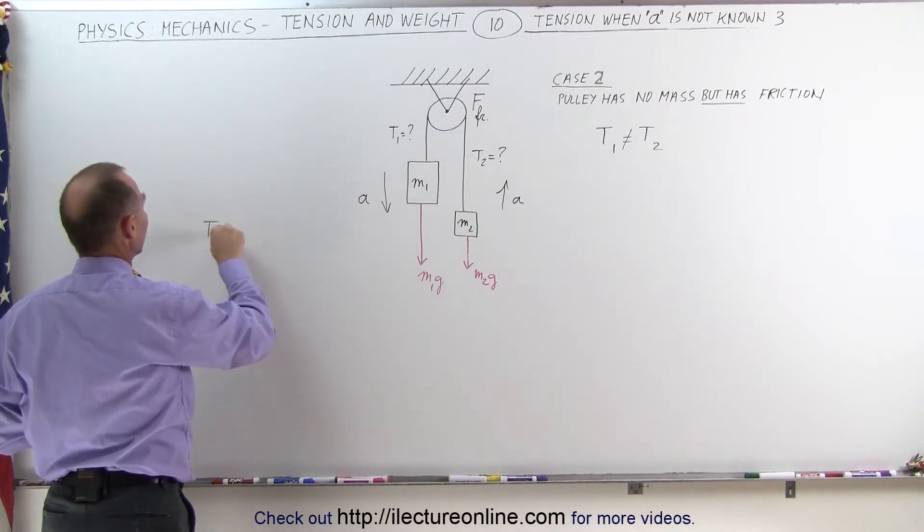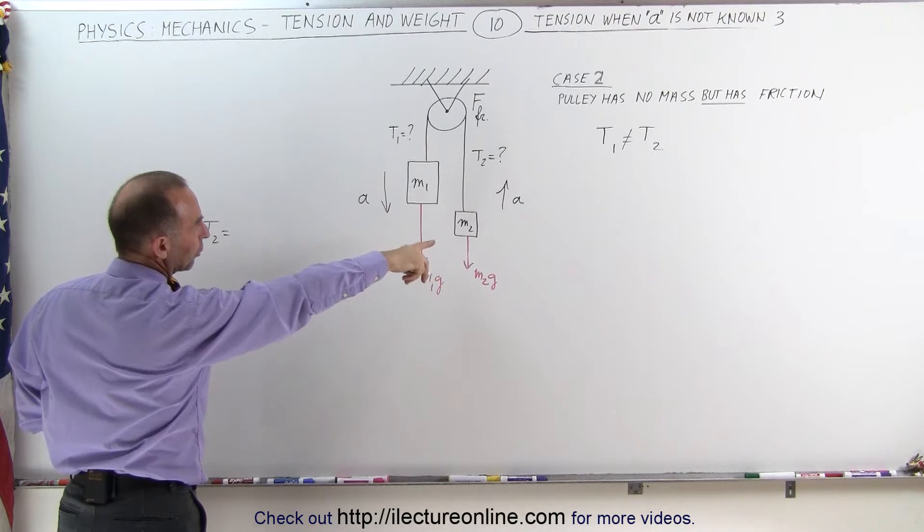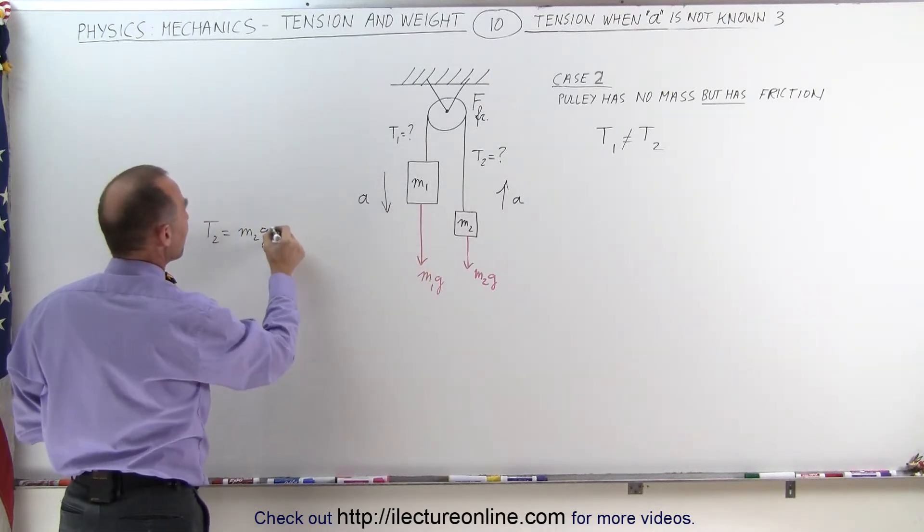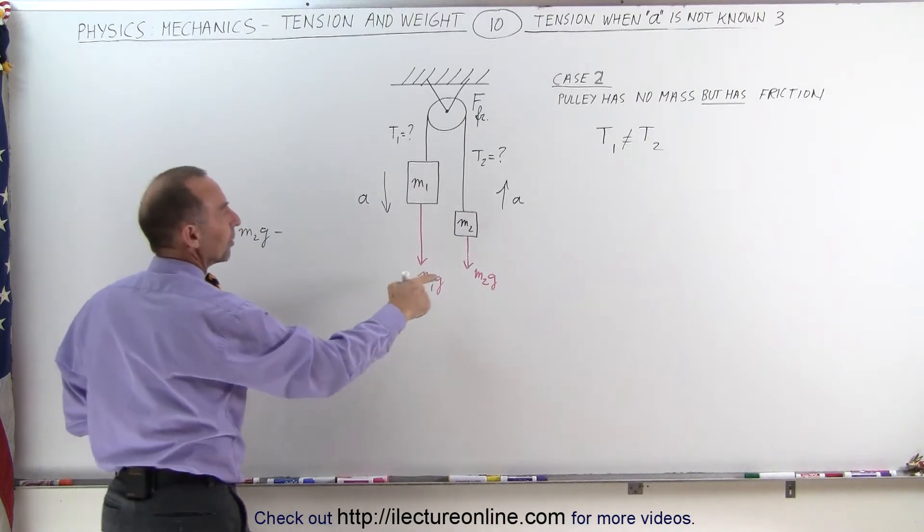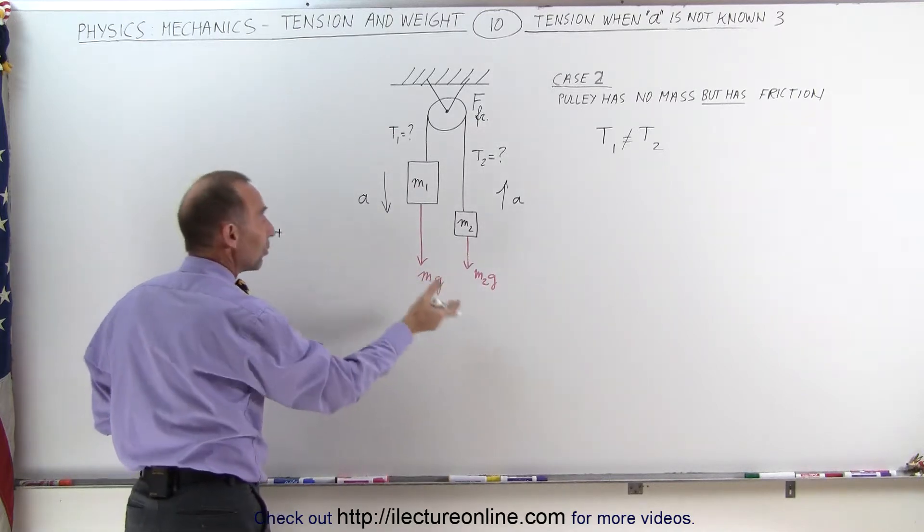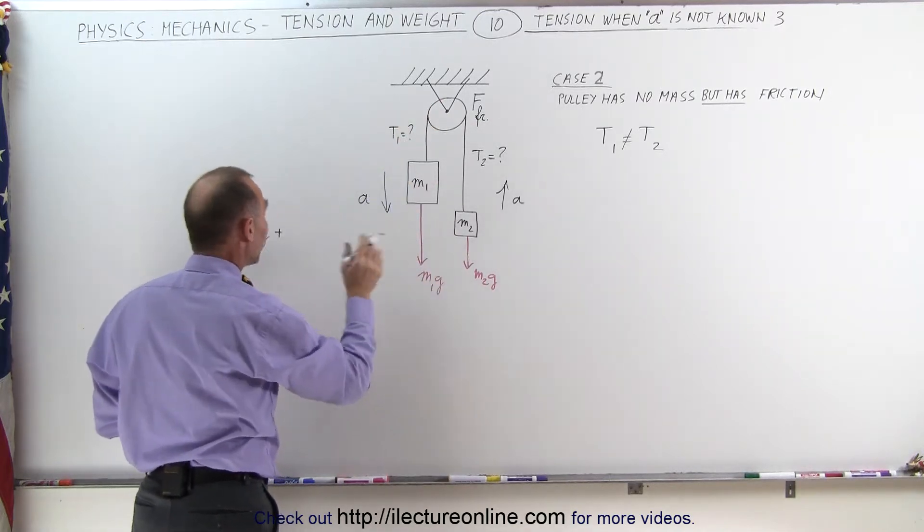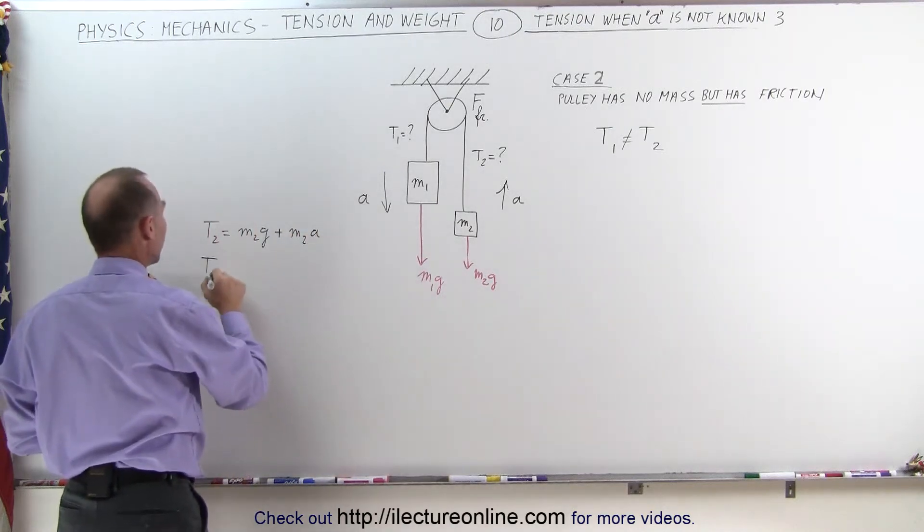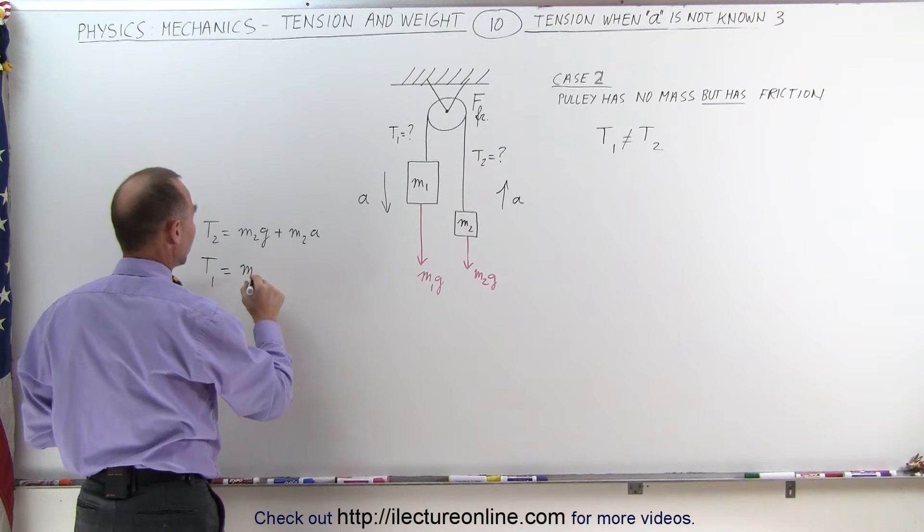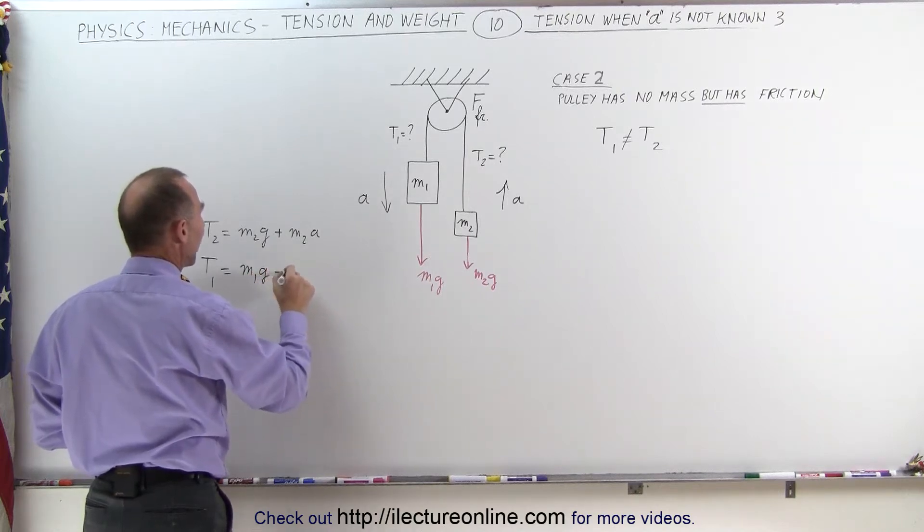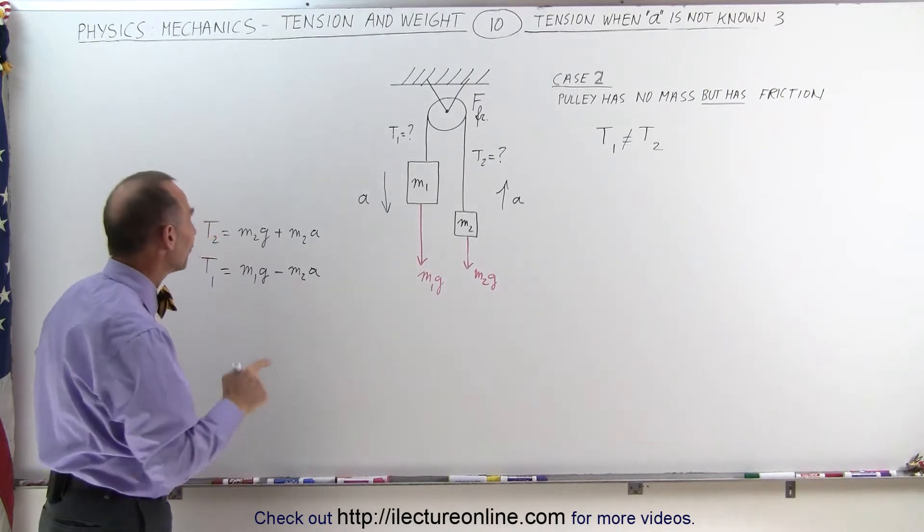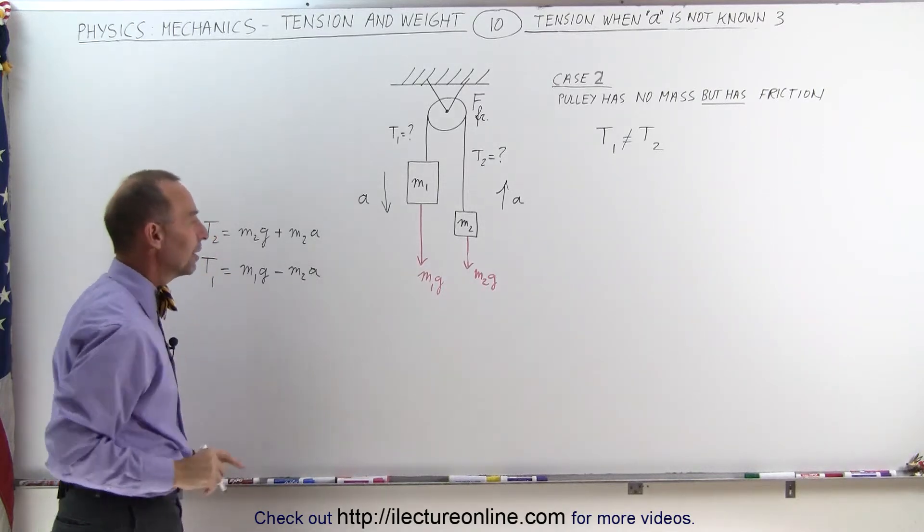Tension two is still equal to the weight of the object, m2g—minus, oh no, not minus—plus, because we're accelerating m2 upward, plus the force required to accelerate it upward. And T1 can be found by taking the weight of the object minus the force required to accelerate it. In this case, you'll find that T1 is not equal to T2.